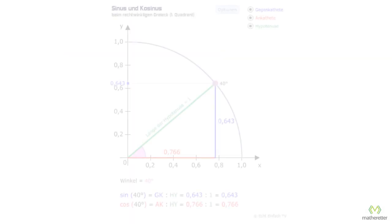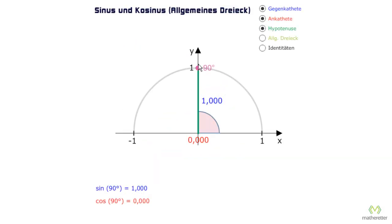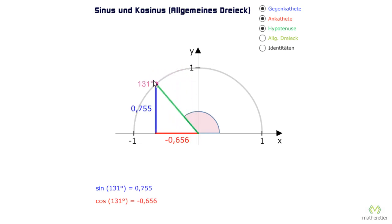Let's remember the previous lessons. We already looked at the angles from 0 to 90 degrees and determined the sine and cosine values for these angles. For that we set the hypotenuse to 1. And then we were able to read the sine value here and the cosine value here on the side. And for angles over 90 degrees, we have already seen, we use a reference triangle, a reference angle on this side, to determine sine and cosine.